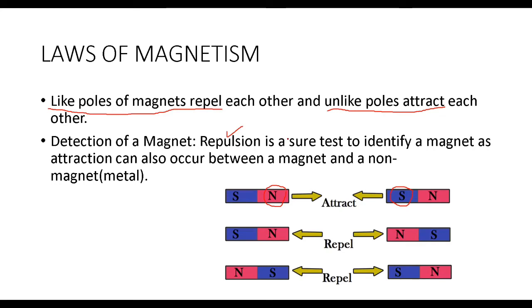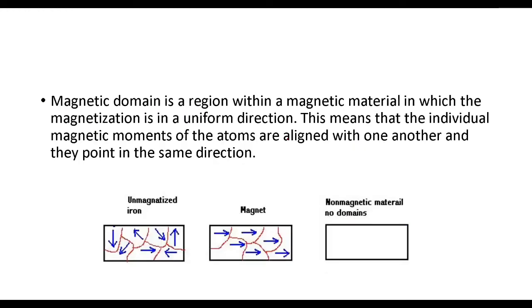For example, you have a substance X and you want to know whether it is a magnet or not. You bring another magnet close to it, and if at any point repulsion is occurring, then that means substance X is a magnet. We cannot use attraction, because if substance X was attracted to the magnet, that substance could also just be a metal — magnets not only attract other magnets but also attract metals to them. So we can't use attraction to detect a magnet.